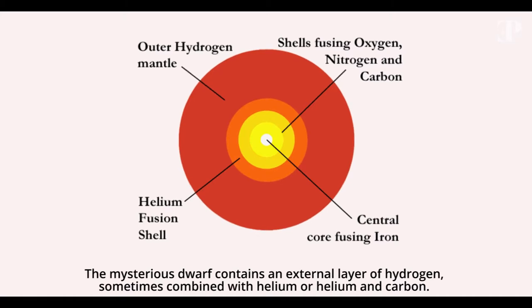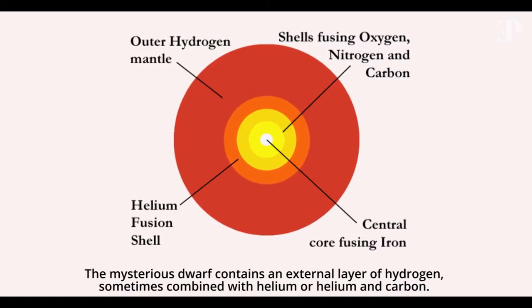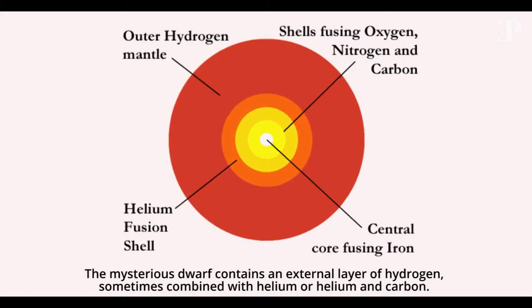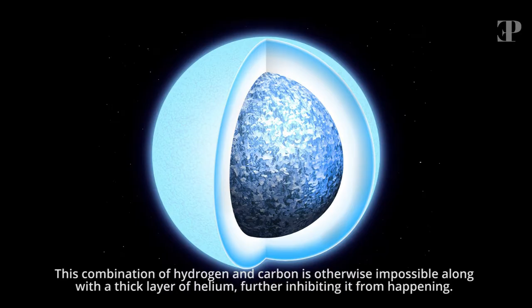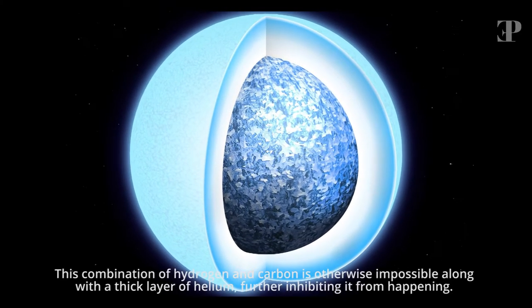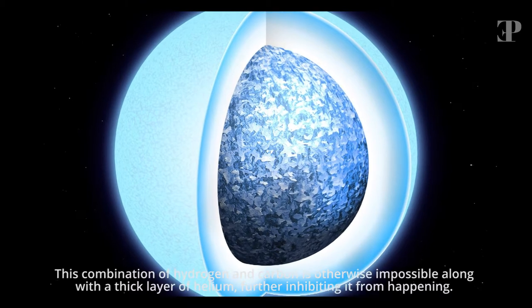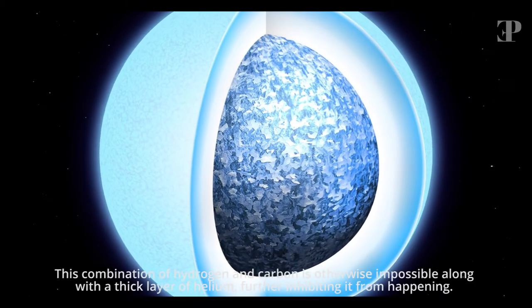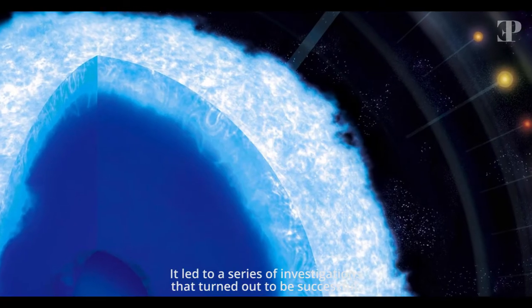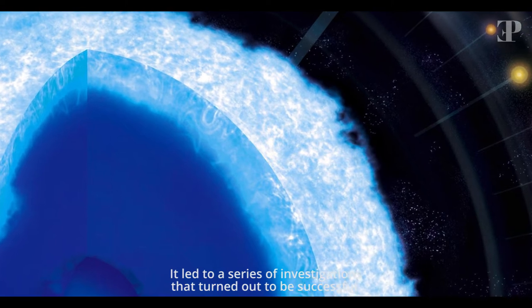The mysterious dwarf contains an external layer of hydrogen, sometimes combined with helium or helium and carbon. This combination of hydrogen and carbon is otherwise impossible along with a thick layer of helium, further inhibiting it from happening. It led to a series of investigations that turned out to be successful.